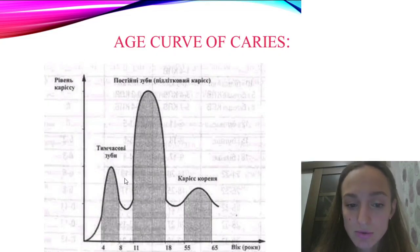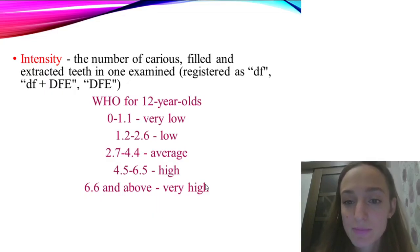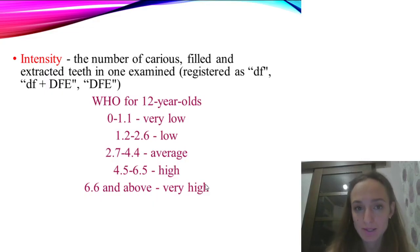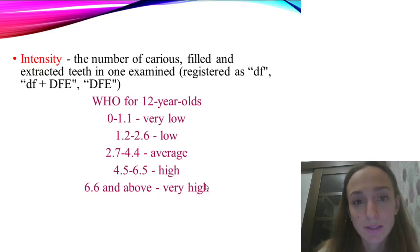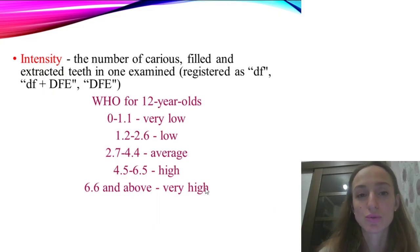The age curve of caries includes caries in deciduous teeth, permanent teeth, and caries of the root of teeth. Intensity is the number of carious, filled, and extracted teeth in one examined individual. If you see in your tasks 'df' or 'dfe', it means you should count decayed and filled teeth for deciduous teeth. For example, if a patient has two decays and three fillings, you add two plus three to get five.